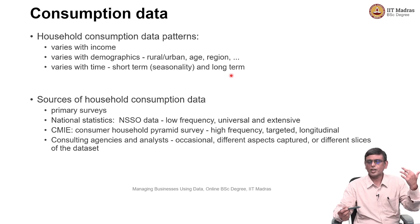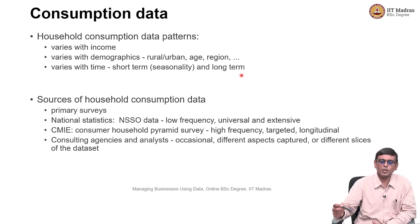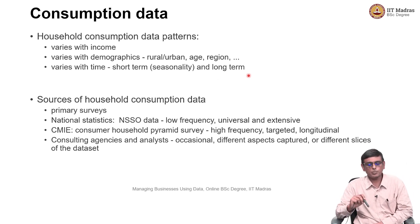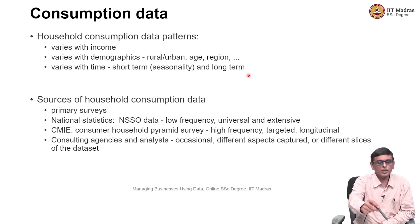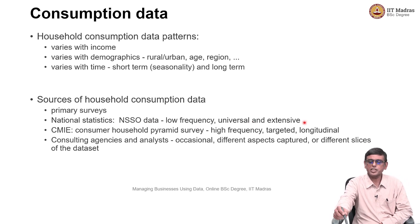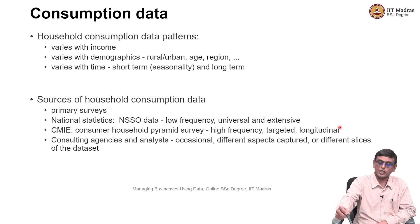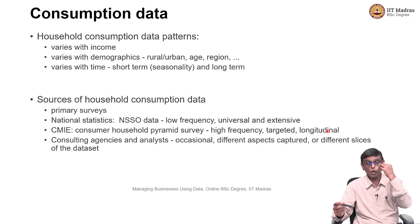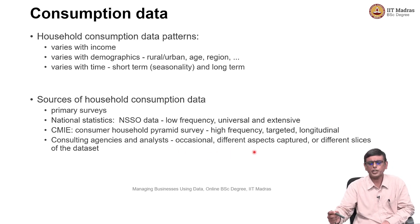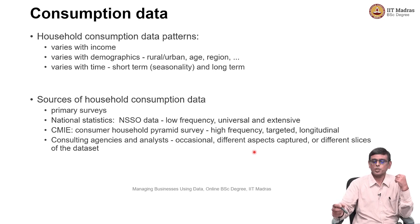Initially, maybe they spend more money on food. Later on, they buy more consumer goods — refrigerators, air conditioners, cars and things like that. The primary sources we saw were: primary survey; the NSSO data, which is low frequency but very extensive and universal; and then the CMIE data, which is the consumer household pyramid survey data — high frequency, targeted, and longitudinal, because it tells you for one household how the household has moved along in time.